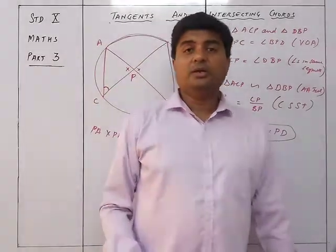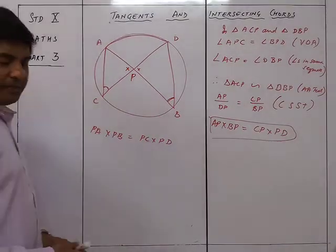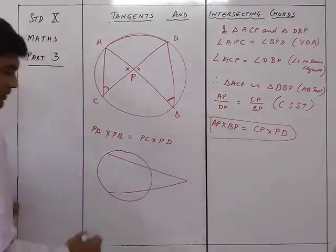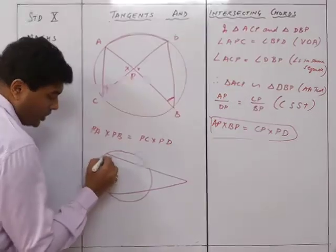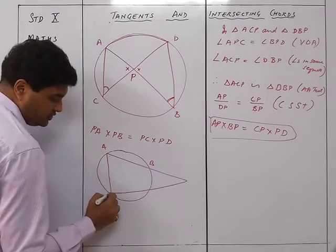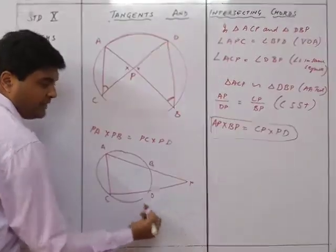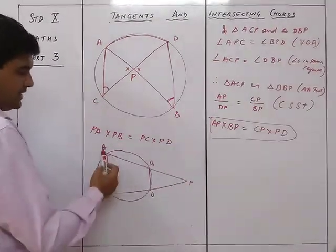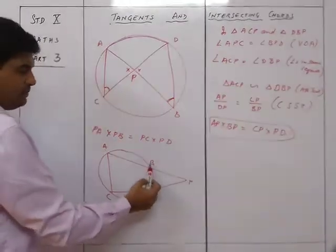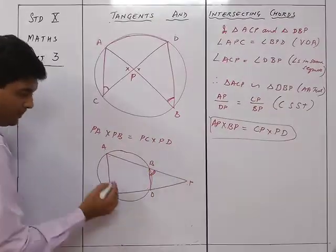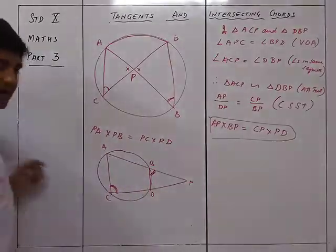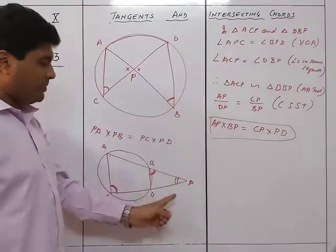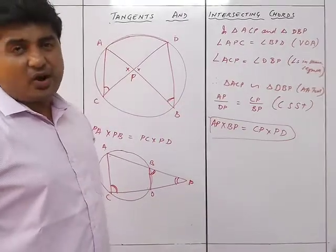Clear — that is your first case. Now for the same theorem when the two chords intersect externally: we have points A, B, C, D and P outside the circle, and PA × PB = PC × PD. We draw the same triangles ACP and DBP. Angle P is common, and angle ACD equals angle DBP because it's the exterior angle of a cyclic quadrilateral.